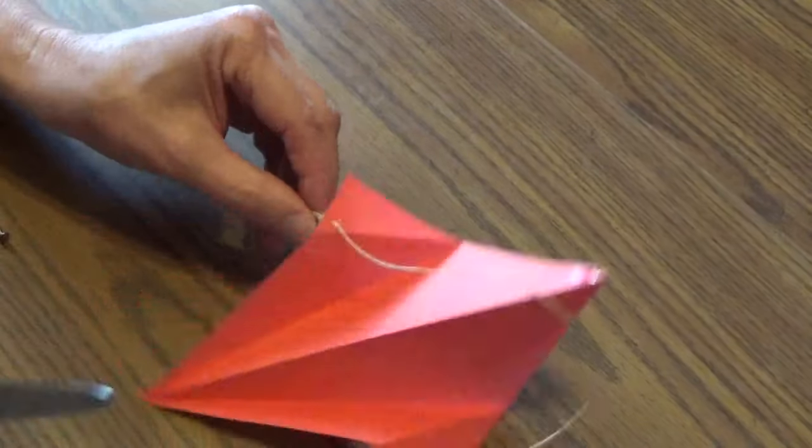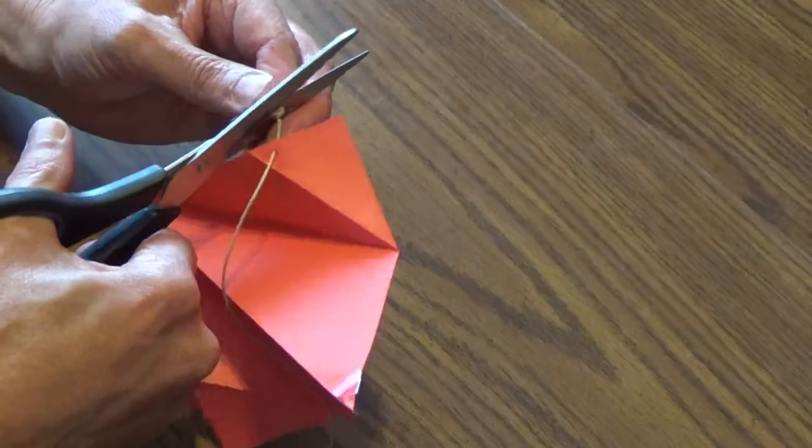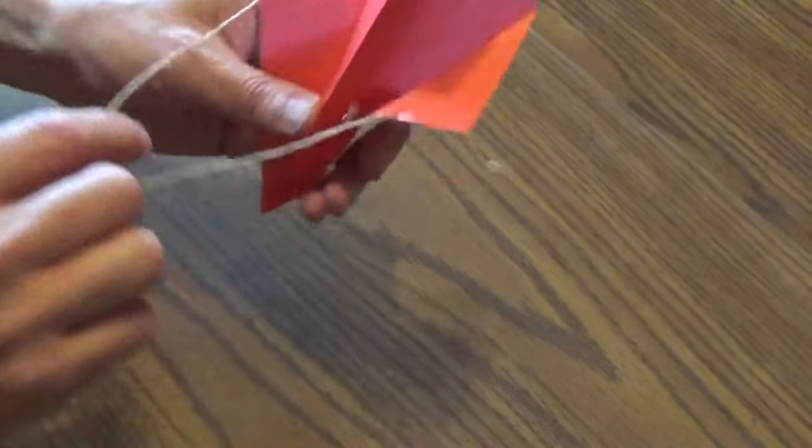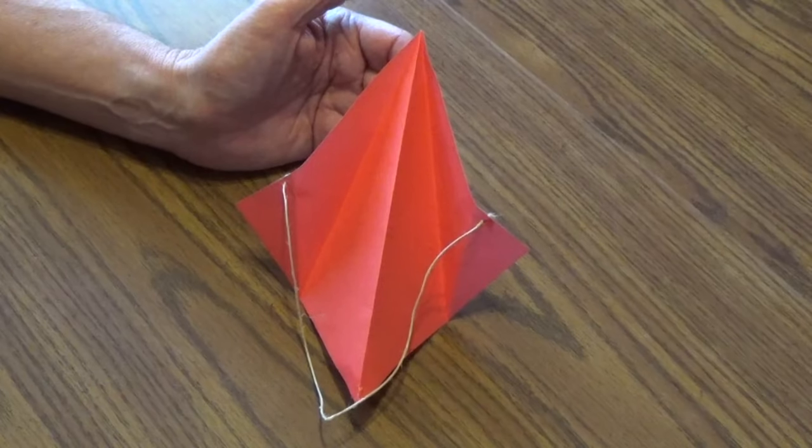Then with scissors we can cut off the excess back here. Just looks a little better. It may even fly a little better. So I've got the string attached now. Now I want to make something for a tail.